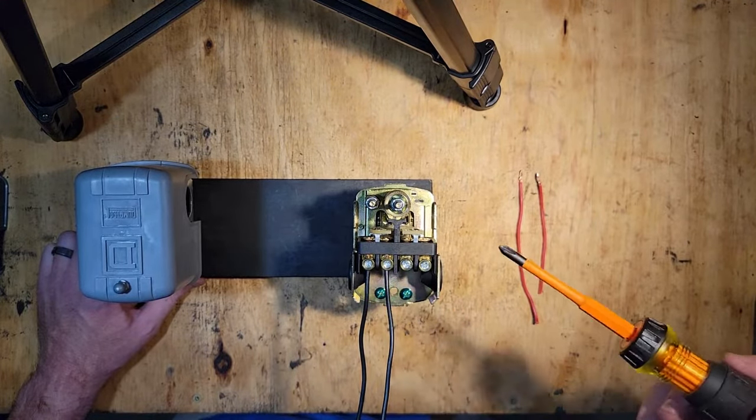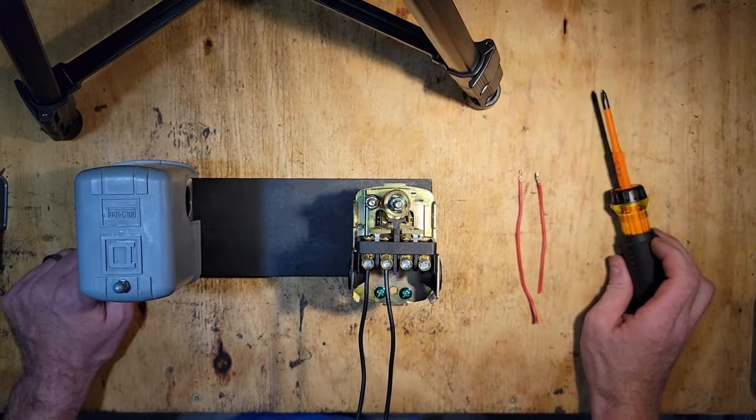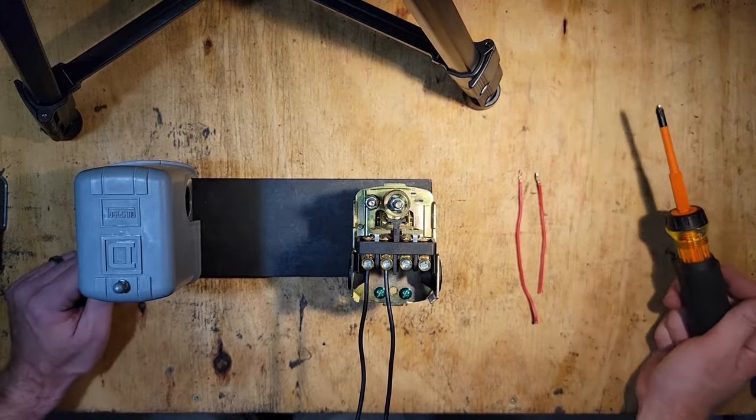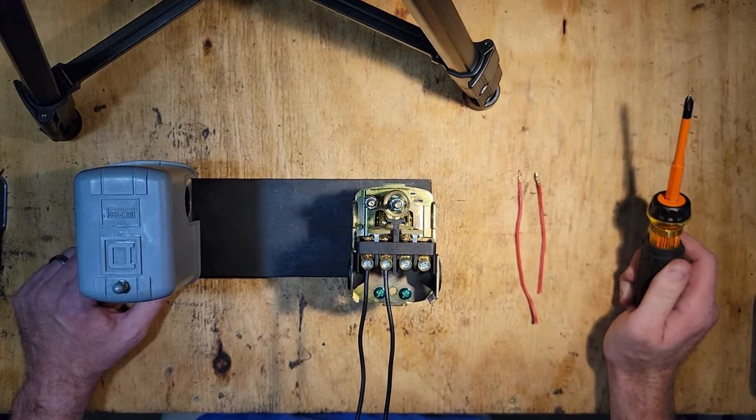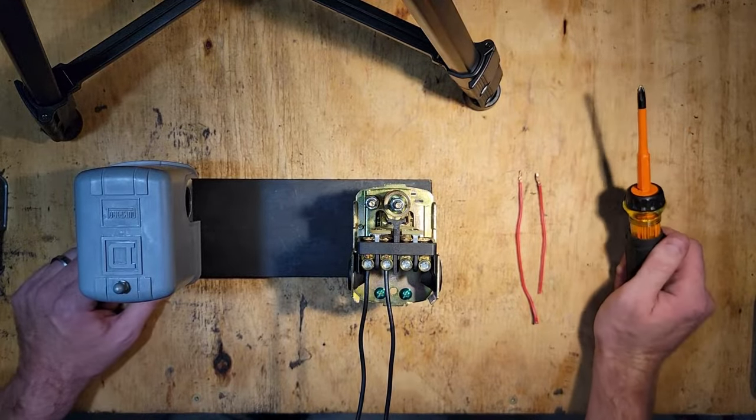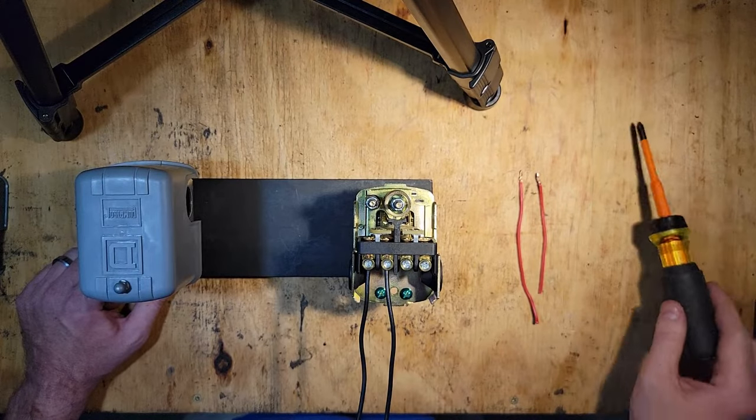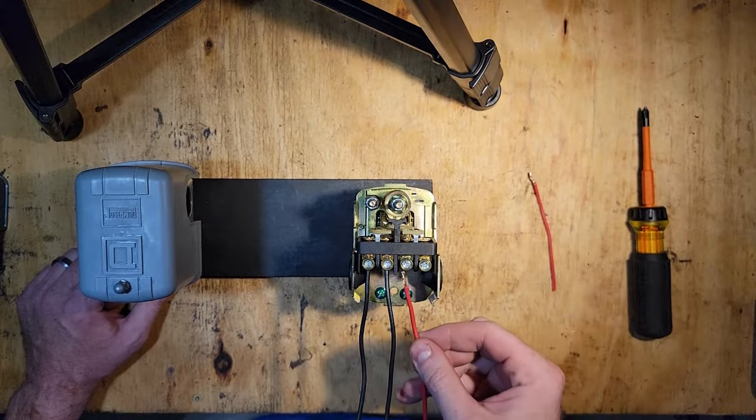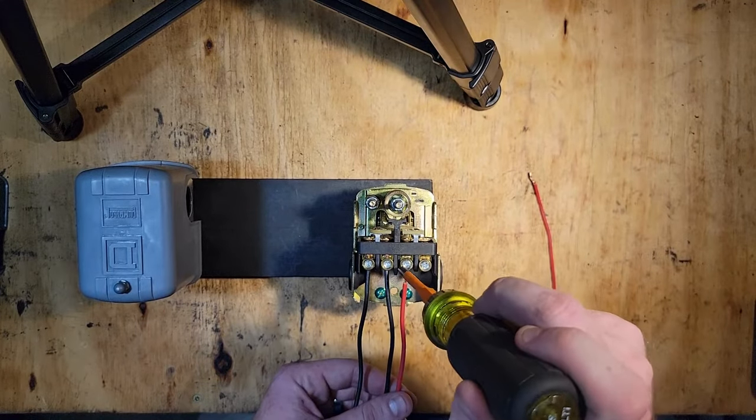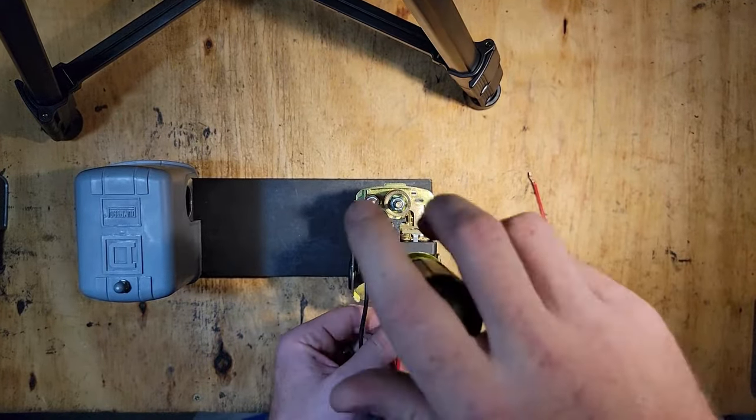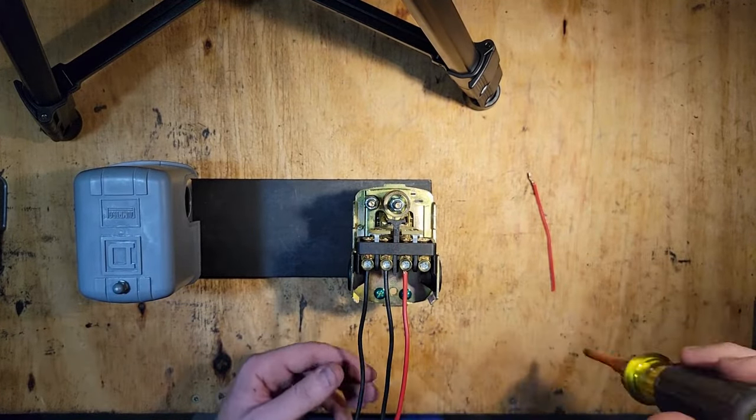Now if you have a control box that does not have the SW terminal, then the switch will function as a way to break the incoming power from your breaker. So in that situation, you're going to have four sets of wires in total. One set of wires is going to be the incoming from your breaker into the switch.